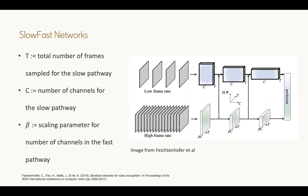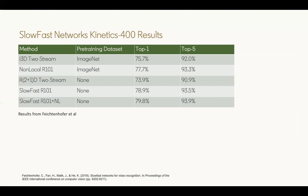In terms of results on kinetics, we find that non-local networks outperform I3D two-stream and R2 plus 1D two-stream. SlowFast with a ResNet 101 architecture outperforms non-local R101. Combining SlowFast with non-local, however, performs the best.